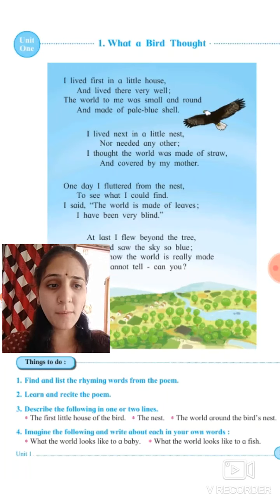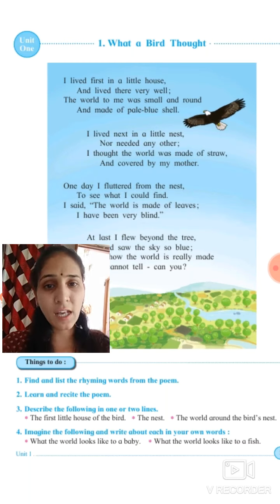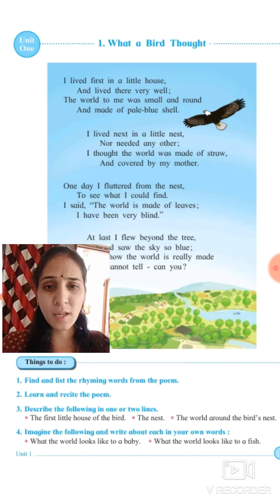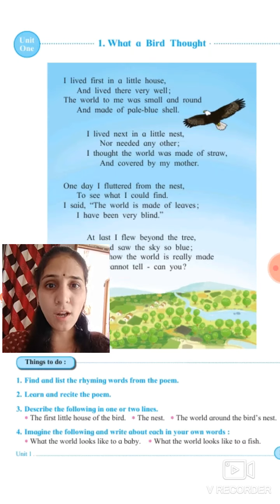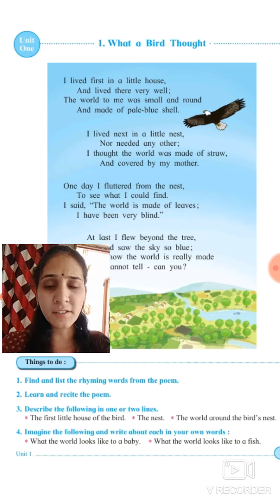So the baby thinks — means jo baby hai, woh aisa soch raha hai ki uska jo ghar hai, woh uske mother se cover kiya gaya hai — safely, woh us nest mein rehta hai. Humne first stanza mein dekha ki bird was born first of all inside the egg. Phir egg se bahar aane ke baad, usne apne aap ko ek nest mein paaya, with its mother covering it.